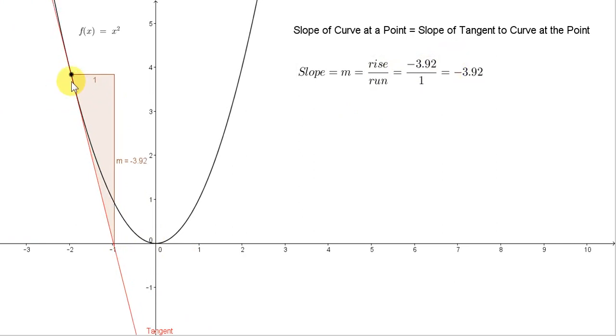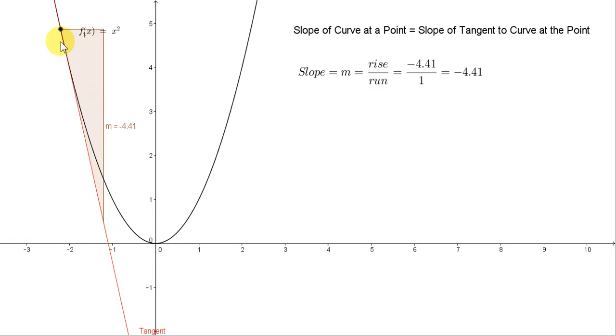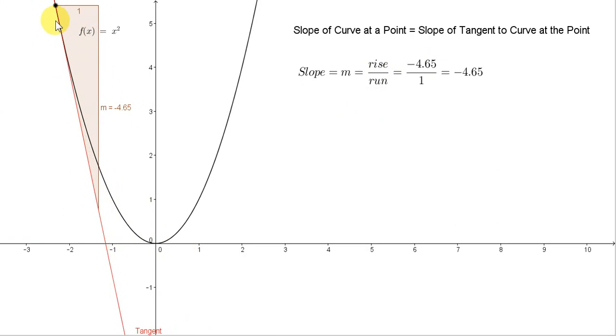And if we move this point up the curve, you can see that the slope of the curve, and hence the slope of the tangent to the curve at this point, is becoming more and more negative.